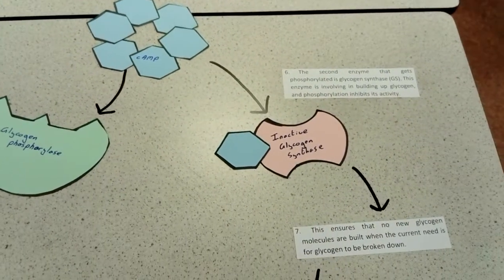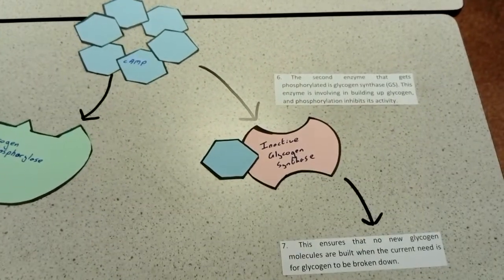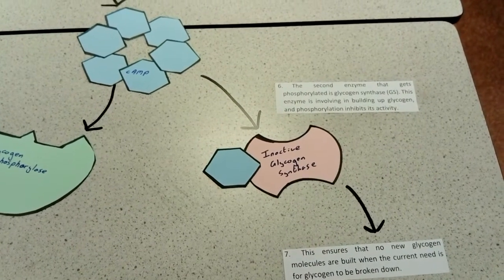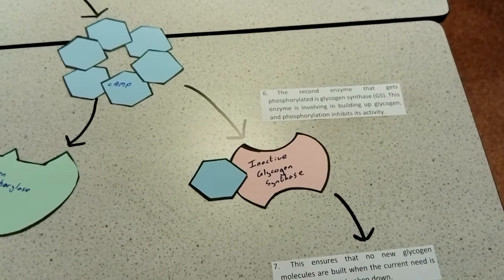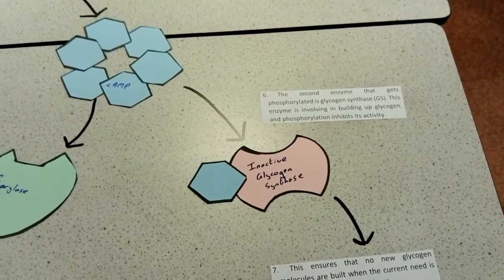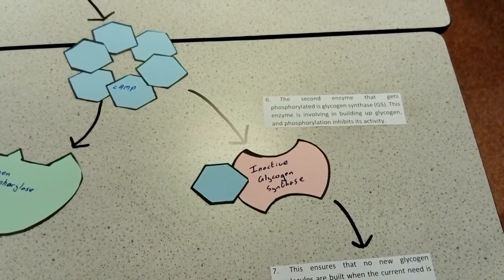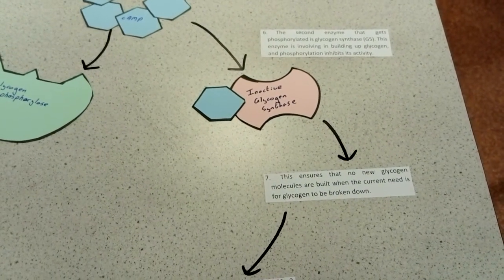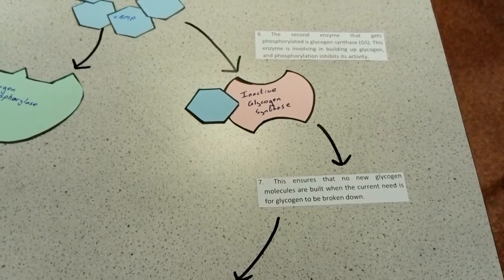Cyclic AMP binds to glycogen synthase causing it to become inactive. Because we've inactivated it, that means that no new glycogen will get built. This ensures that no new glycogen will be made in the cell.